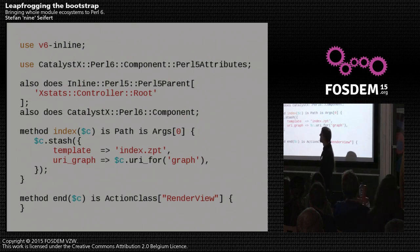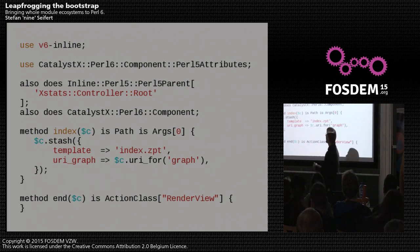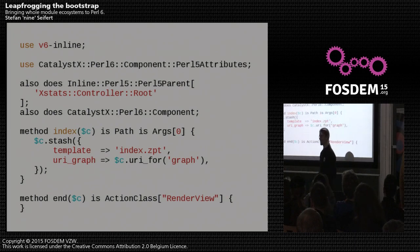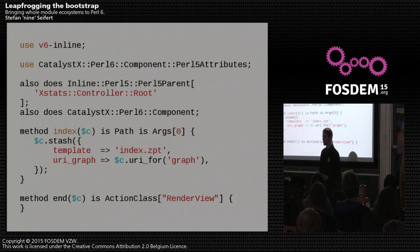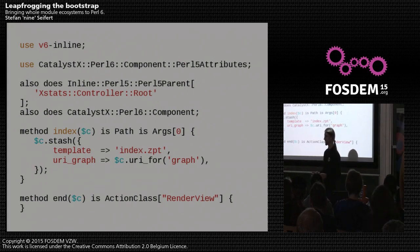V6::Inline is actually implemented as a source filter, and it replaces all your Perl 6 code with a static 1. I know source filters are evil and everything, but they are evil because you cannot stack them. You don't want to use any other source filters with your Perl 6 code anyway, so I guess in this case it's kind of okay.